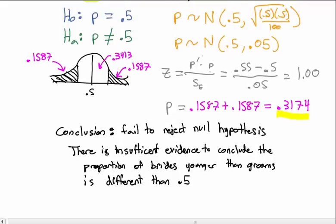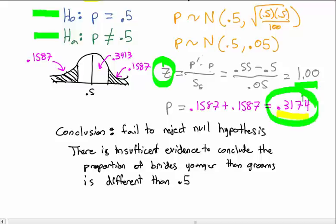This process of hypothesis testing is the essential foundation for everything we'll see in the rest of the course. You need to know how to make a null and alternate hypothesis, calculate your test statistic to find a p-value, and determine whether to fail to reject or reject the null hypothesis — we never accept. Take a look at the homework; we'll do some practice in class.